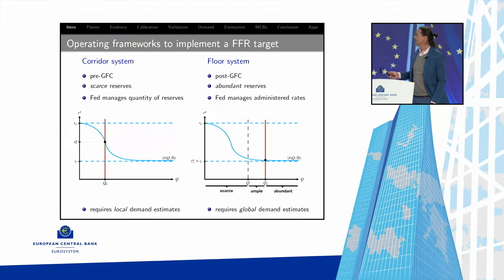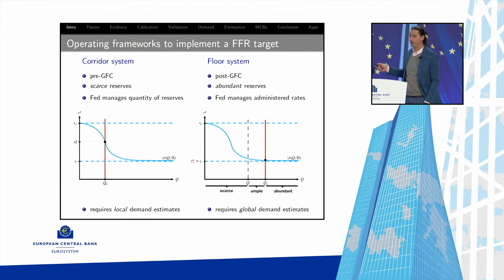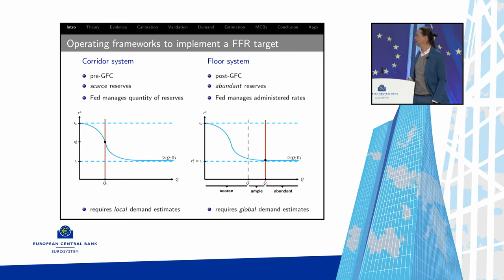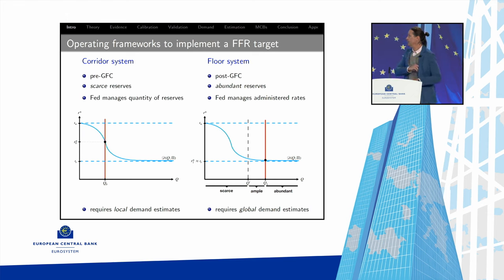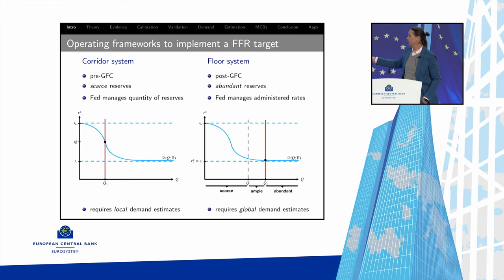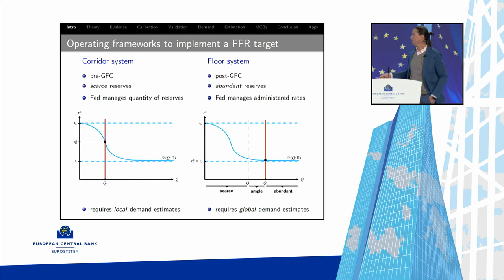These are the two textbook operating frameworks a central bank can use to implement a particular interest rate target — I'll talk about the Fed funds rate in particular. There's a corridor system, in place in the U.S. before the great financial crisis, characterized by scarce reserves. In that model, quantity of reserves is on the horizontal axis and the equilibrium Fed funds rate on the vertical. You operate on the steep part of the demand, and you manage the R-star — the interest rate you want to implement — via open market operations, changes in Q.